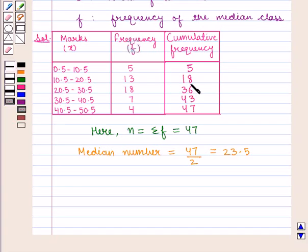Now cumulative frequency just greater than 23.5 is 36 whose class interval is 20.5 to 30.5 which is the median class. Therefore the median class is 20.5 to 30.5.